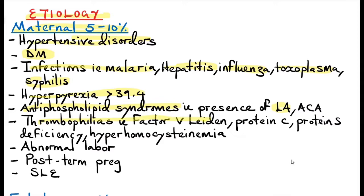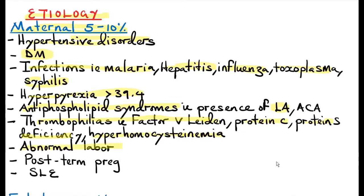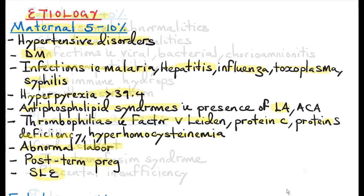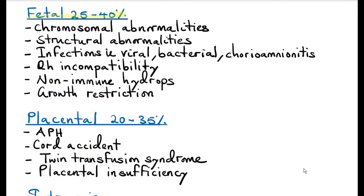Thrombophilias like Factor V Leiden, Protein C and Protein S deficiency, and hyperhomocysteinemia. Abnormal labor such as prolonged or obstructed labor, or even a ruptured uterus, can cause a fresh stillbirth due to fetal asphyxia. Post-term pregnancy as well as systemic lupus erythematosus — remember this is an autoimmune disease — are also maternal causes.